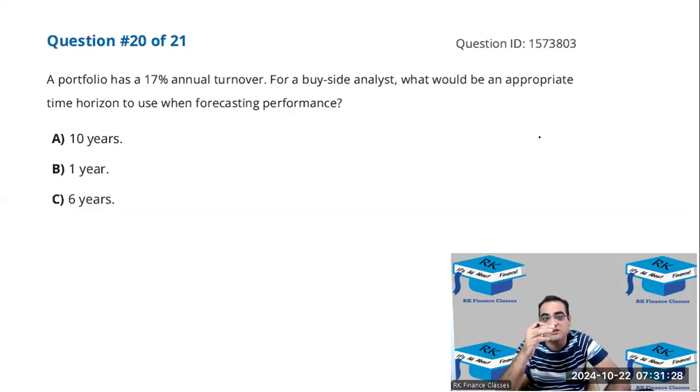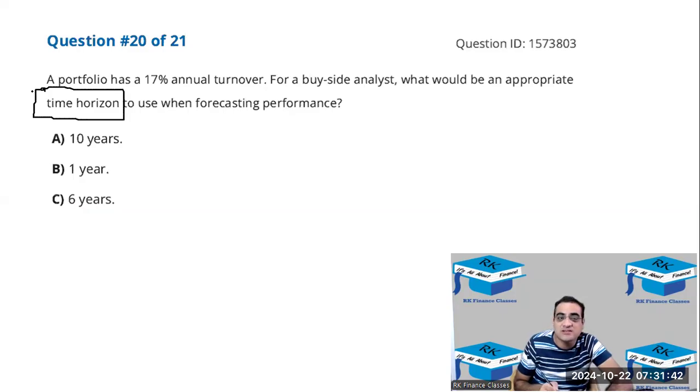Okay, so this question was directly from a concept in the financial modeling chapter, but I have mentioned that this is a chapter of equity. So over here, how long should be the time horizon while forecasting?